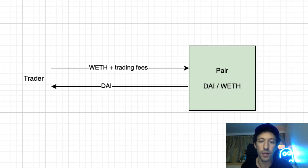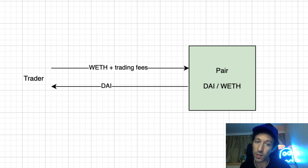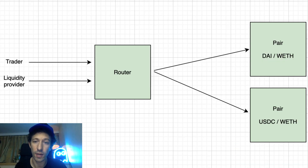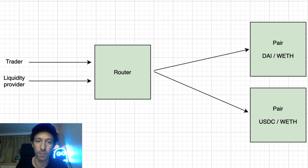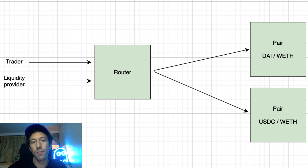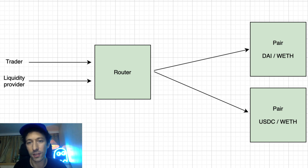If you are a trader and you want to buy some wrap ether with this pair smart contract, you send some DAI to the smart contract plus the trading fee, and in exchange you get the wrap ether tokens. It can be a bit tricky to interact directly with a pair smart contract, so the Uniswap team created another smart contract called the router as a convenience. If you are building your own system around Uniswap, it's recommended you use the router smart contract instead of directly interfacing with pair contracts. In some rare cases where you need more flexibility, that's when you would directly interact with the pair.